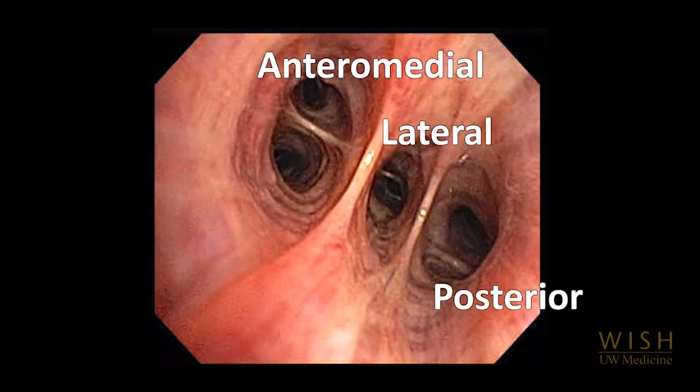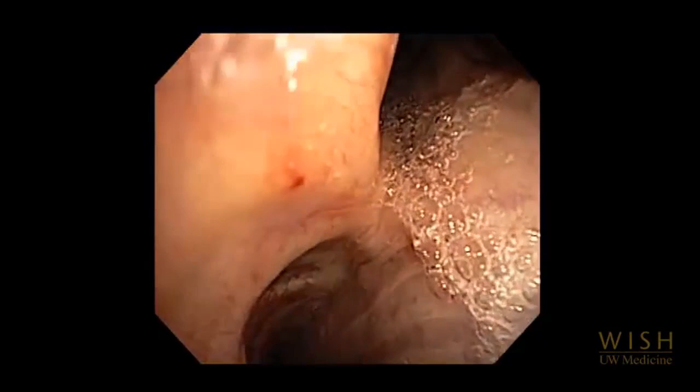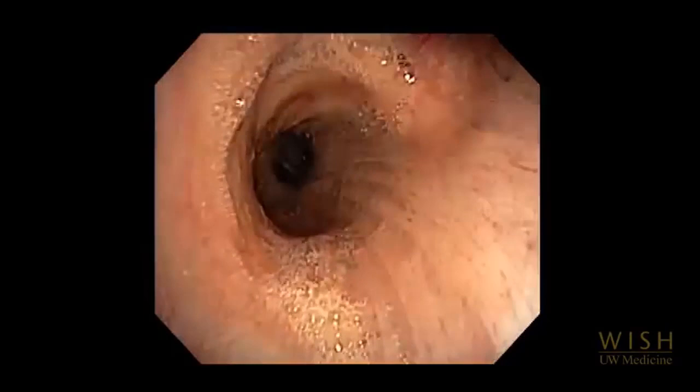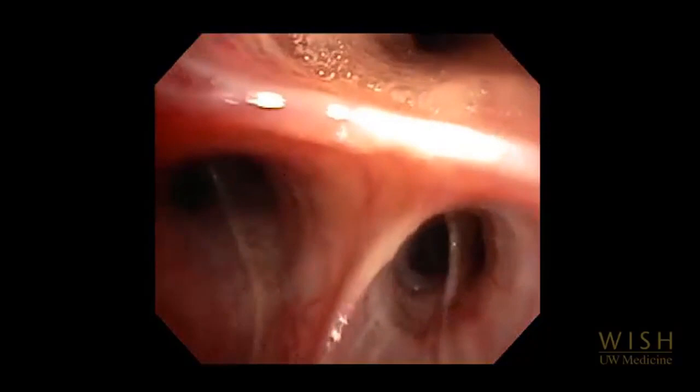After completing full inspection of one lung, return to the main carina to begin inspection of the other. The bronchoscope is entering the right main stem. The distance from the main carina to the right upper lobe bronchus is shorter than from the main carina to the left upper lobe bronchus. The right upper lobe bronchus takes off anterolaterally. The right upper lobe trifurcates into three segments. It can be hard to see all of these at the same time. Here we clearly see the anterior and posterior segments. The apical segment is just visible.